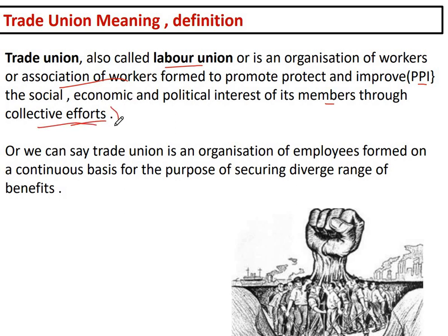जो मजदूर होते हैं, जो employees होते हैं, वो individual interest achieve नहीं कर पाते हैं — उनको social, economic, political interest को protect करना रहता है, उसके लिए वो union बनाते हैं, एक association बनाते हैं और collective effort की तरह उसको achieve करते हैं। So that is called the trade union. We can say trade union is an organization of employees formed on a continuous basis for the purpose of securing a diverse range of benefits.